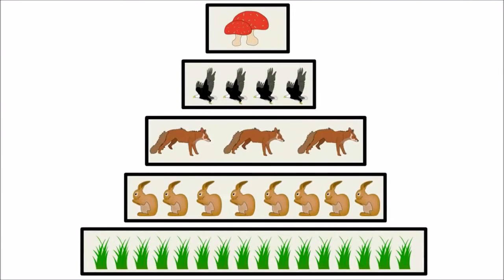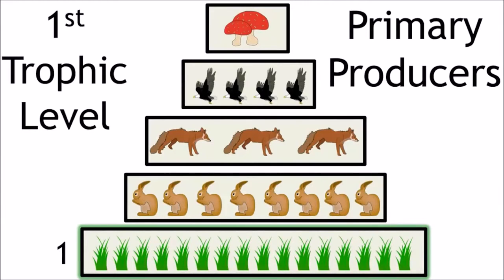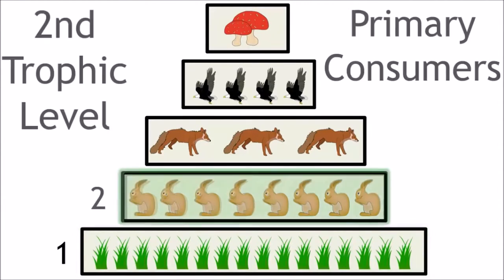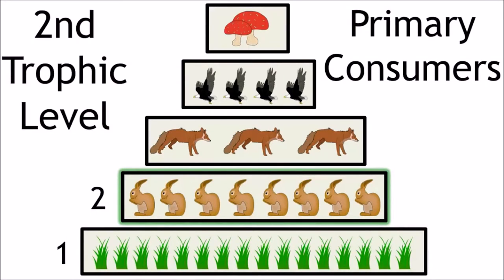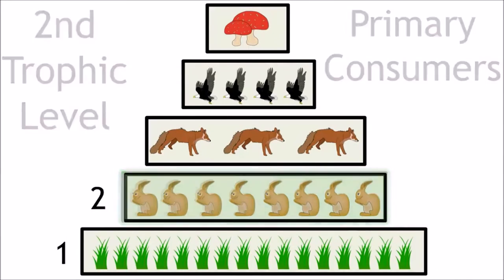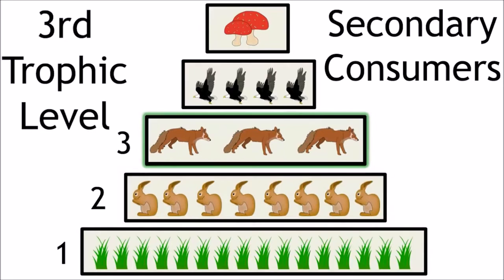Now let's look at the trophic levels in this community. The first trophic level is the primary producers, the grass. Level 2 is the primary consumers, which is the rabbits. The third trophic level is secondary consumers, which in this example is the fox.